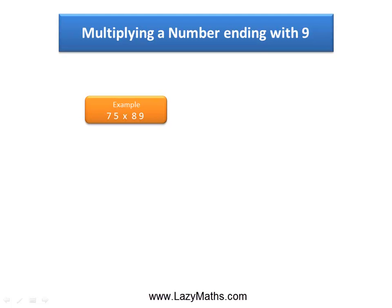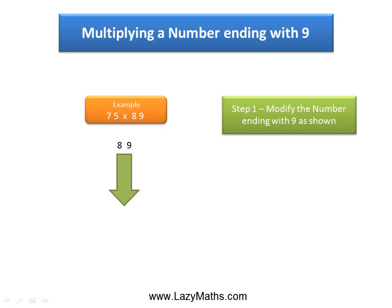Here's an example of multiplying any number ending with 9. 75 times 89. As you can see, 89 is the number that ends with 9 in this case. So we'll convert 89 into 90 minus 1.